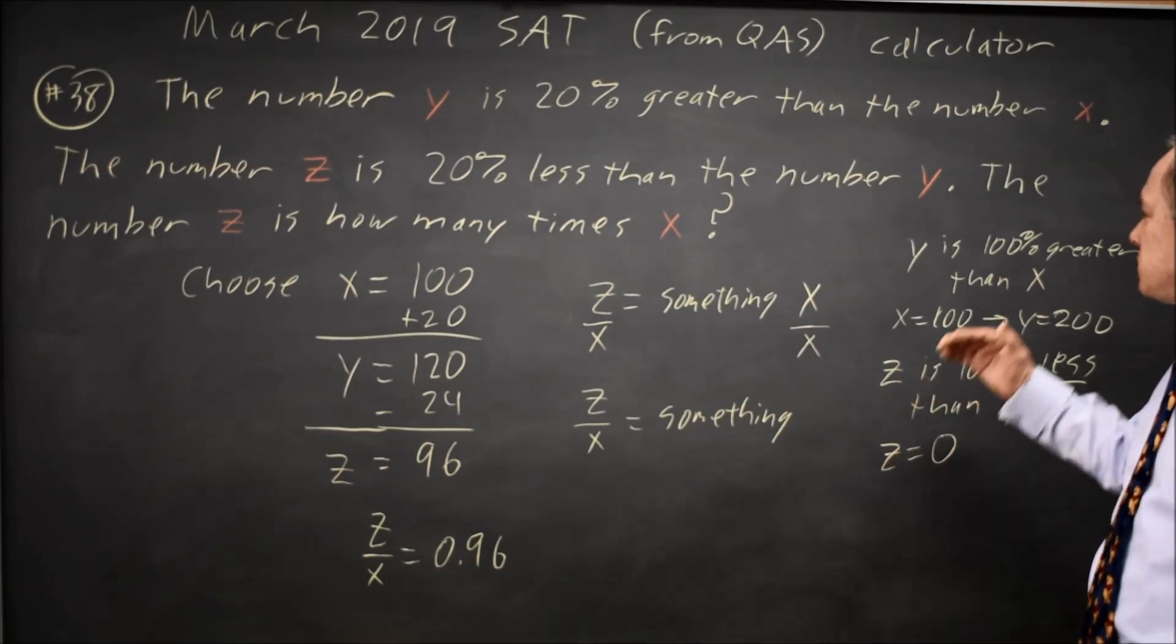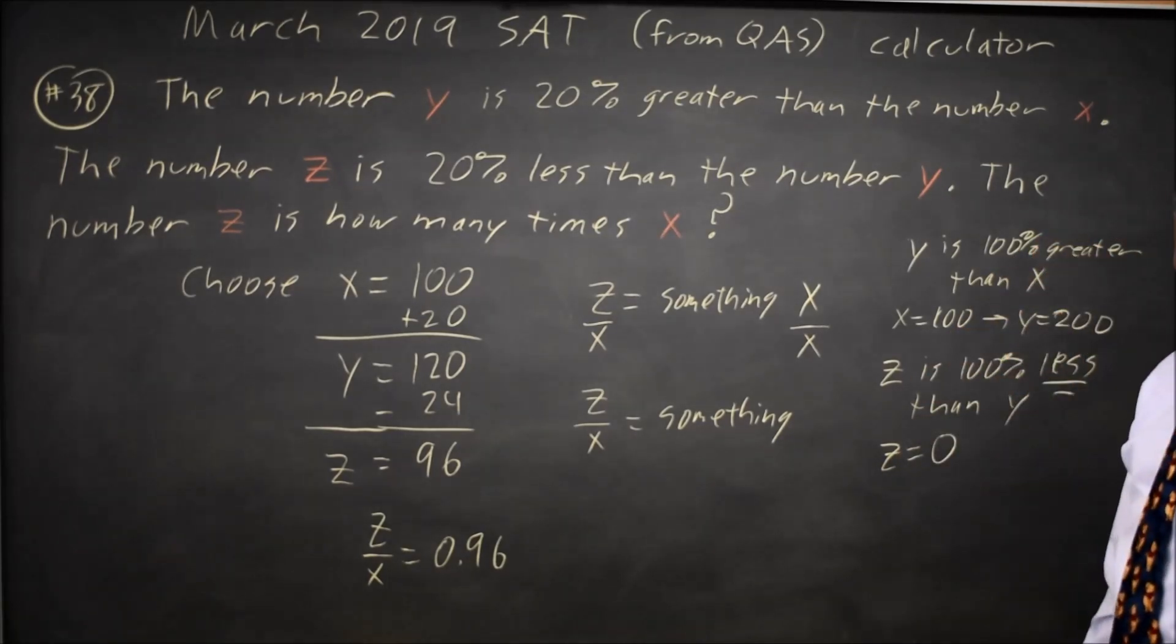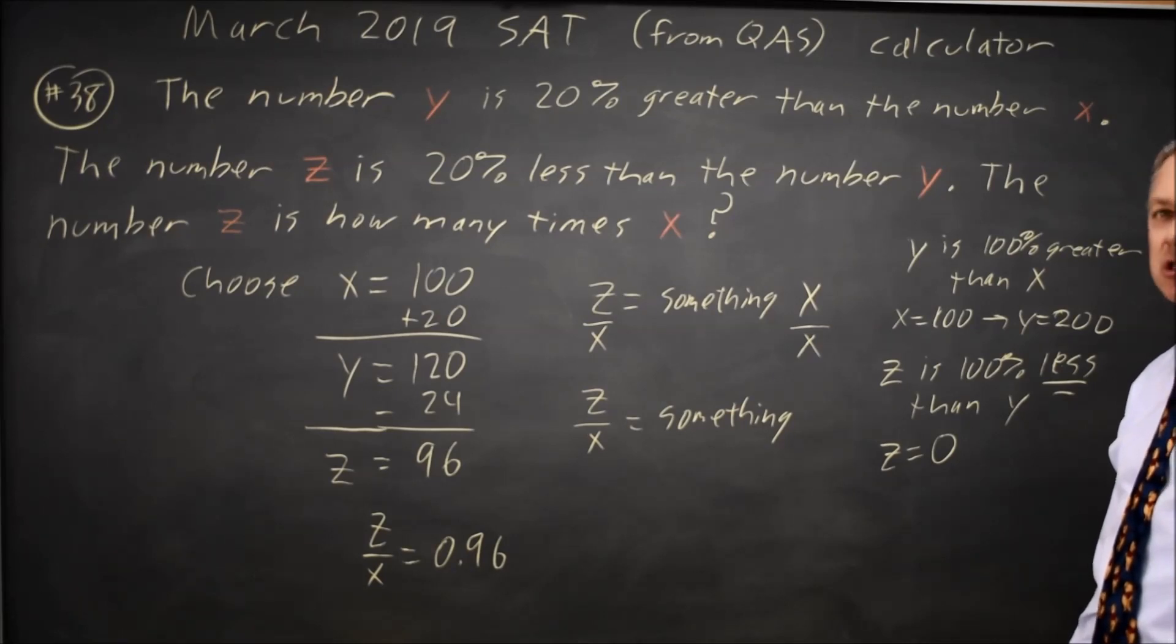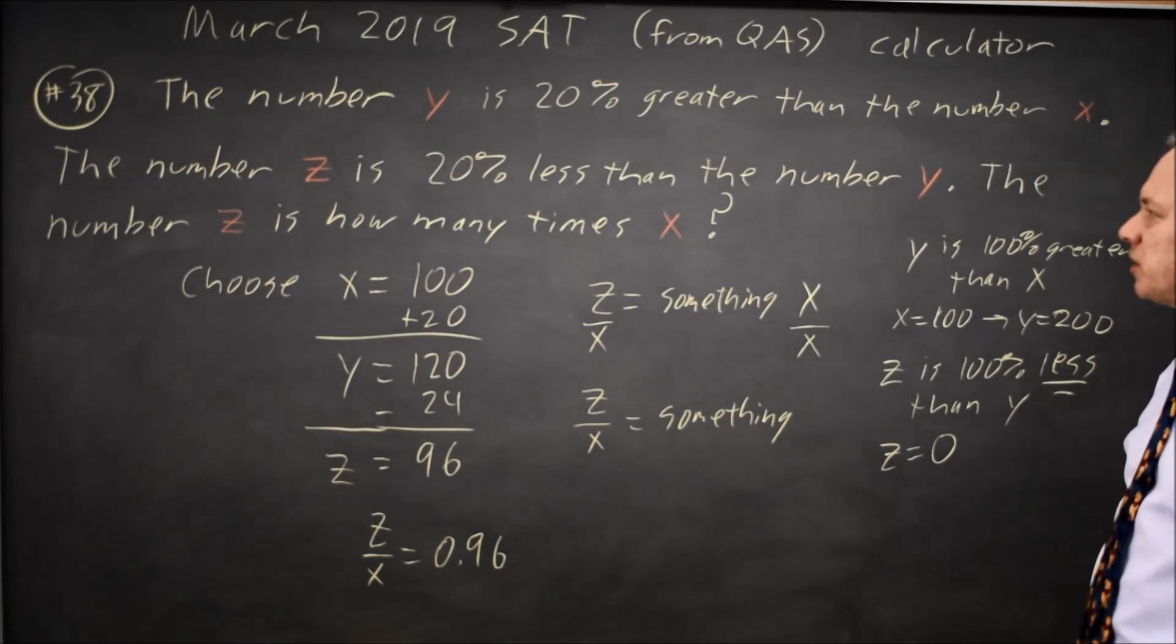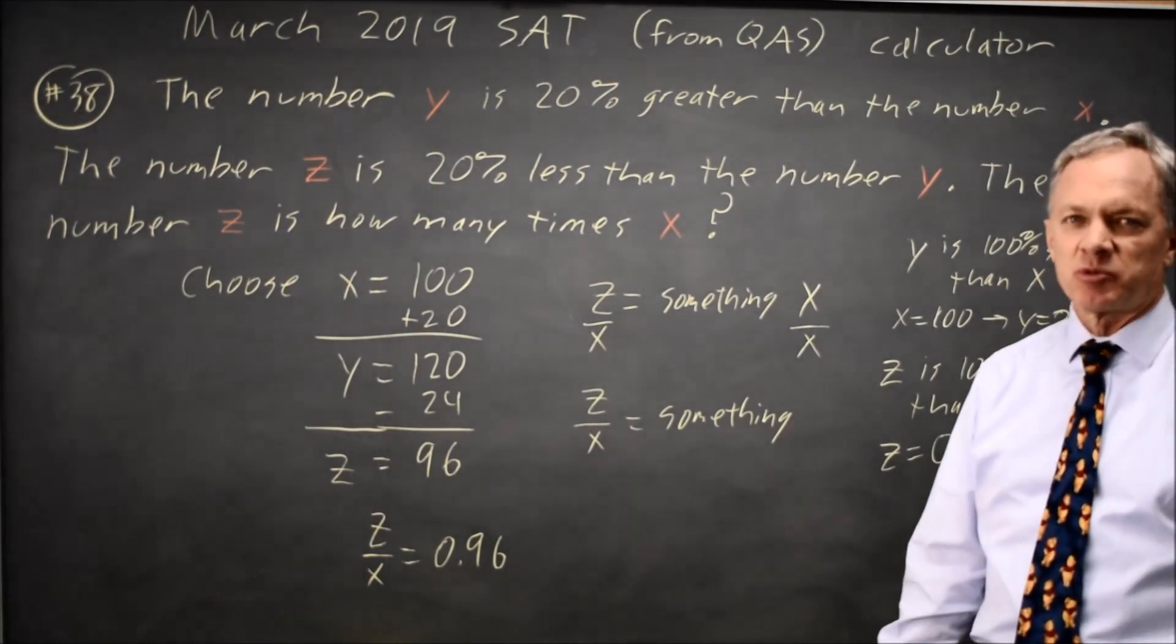If we add a percentage from our starting value and then we subtract the same percentage from our new value, the amount we're subtracting is larger than the amount we added. We end up with a smaller number and College Board has asked this question several times before.